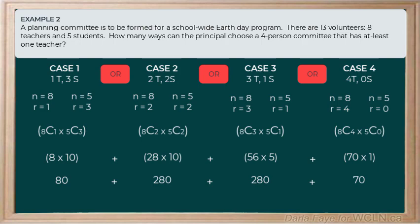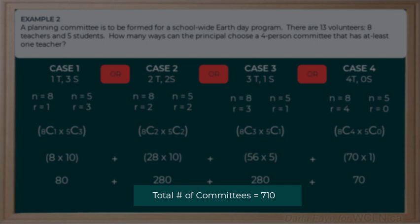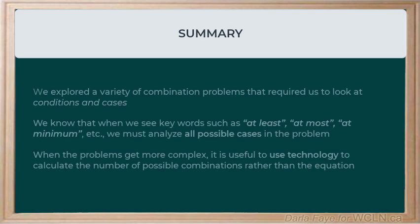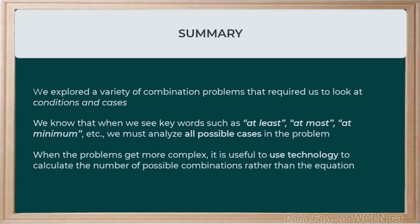To find the total number of possibilities, I add them all up and get 710 possible committees. That brings us to the end of our video. We've explored combination problems with conditions and cases, and when we look for keywords like 'at least,' 'at most,' or 'at minimum,' we need to analyze all the different possible cases. As these problems get more complex, it's useful to leverage technology instead of always using the equation.